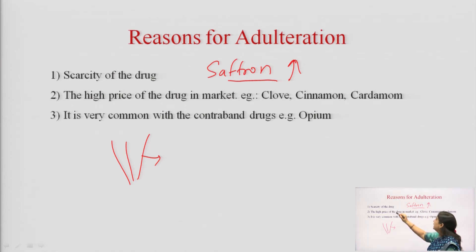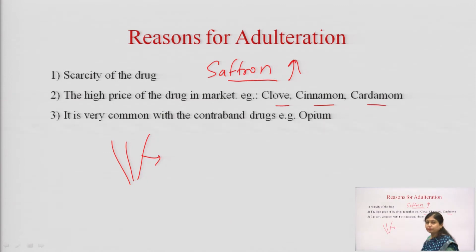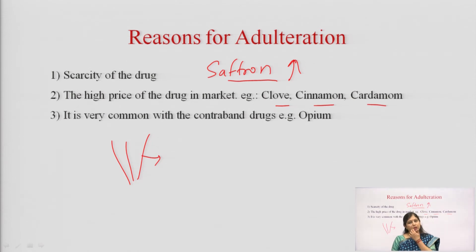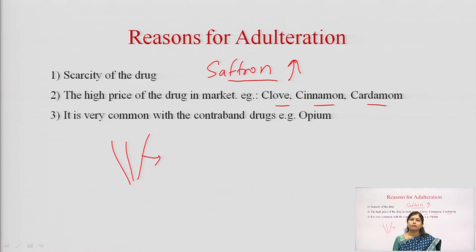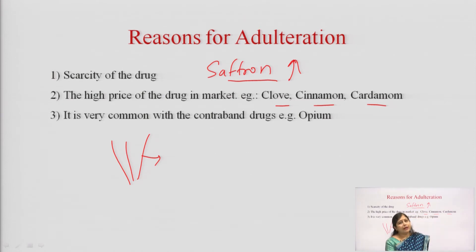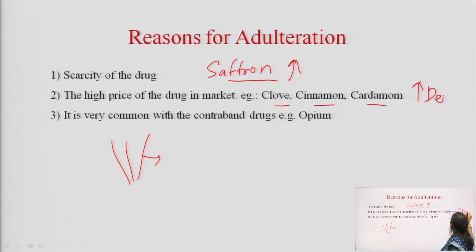The second point is the high price of the drug in the market. For example, clove, cinnamon, and cardamom — these spices are very expensive drugs because the market has a lot of demand. They are used as spices, in formulations, and as flavoring agents. Because of these requirements the cost increases. This is a situation of high demand and low supply.